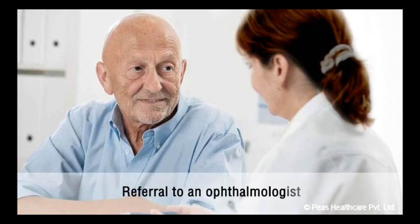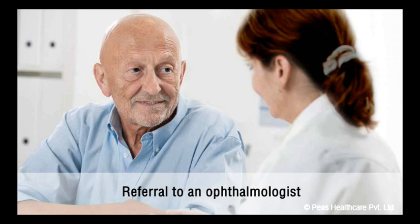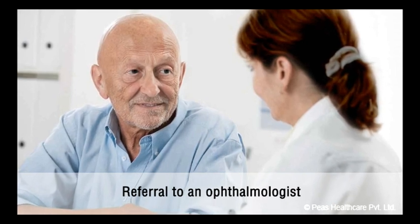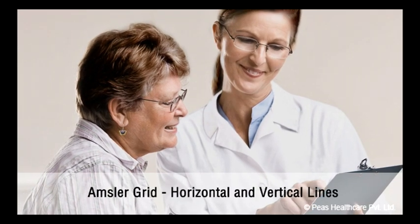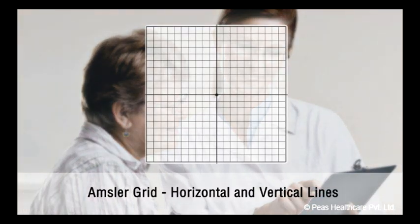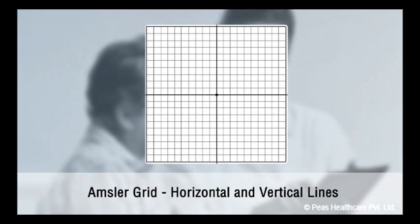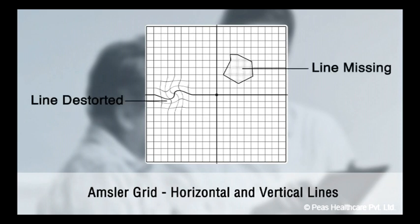If you develop symptoms suggestive of ARMD, your doctor will refer you to an ophthalmologist, who is specialized in managing eye disorders. The ophthalmologist may ask you to look at a special piece of paper with horizontal and vertical lines known as Amsler grid to check your visual fields. If you find that any section of the line is missing or distorted, then ARMD is a possible cause of the visual problem.